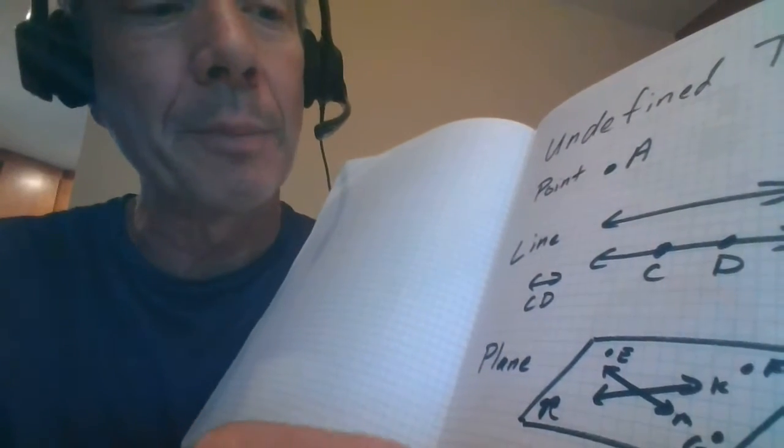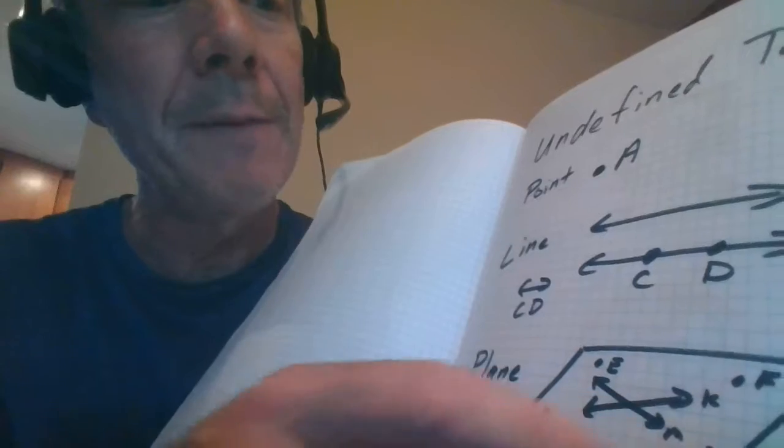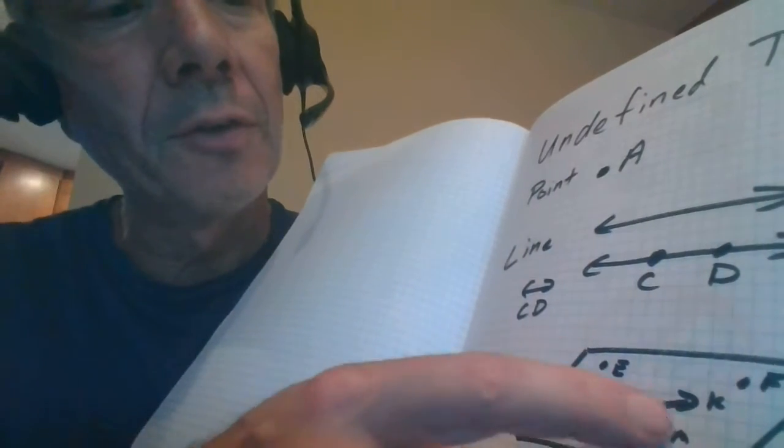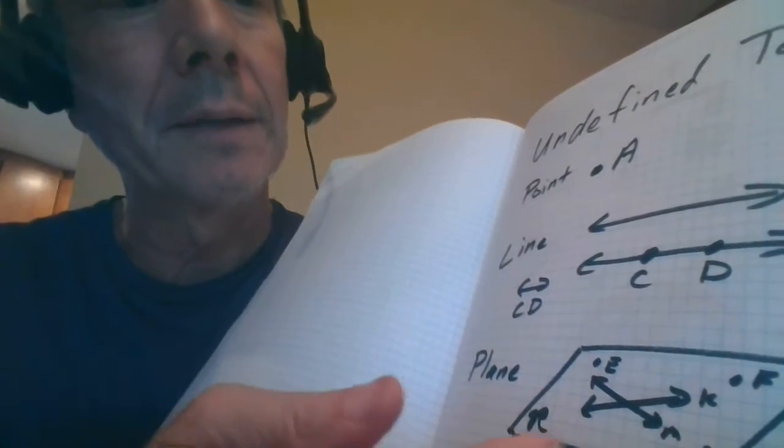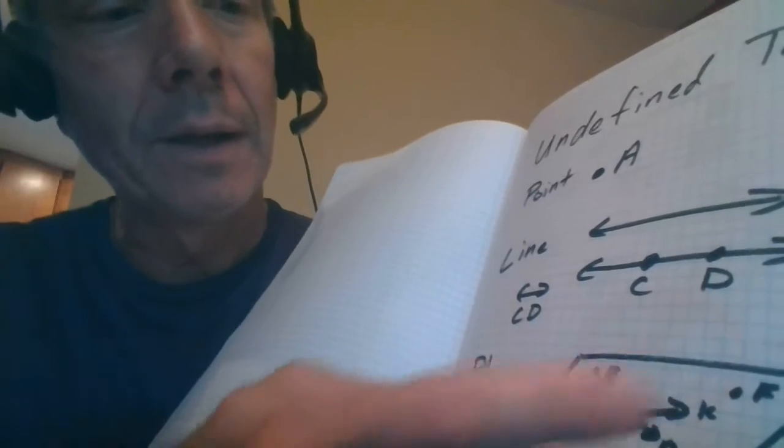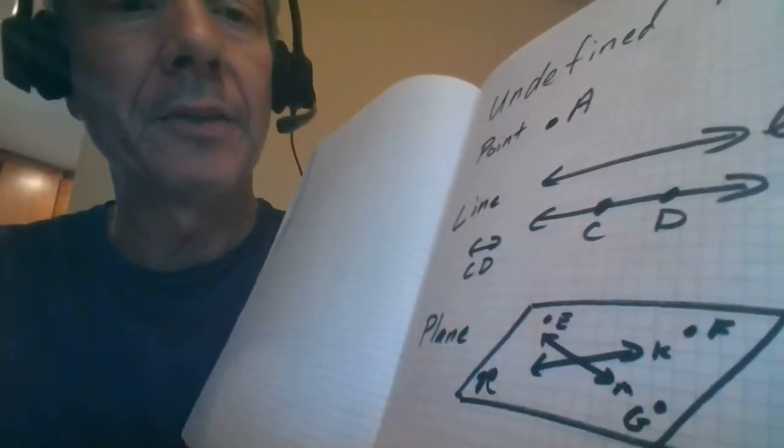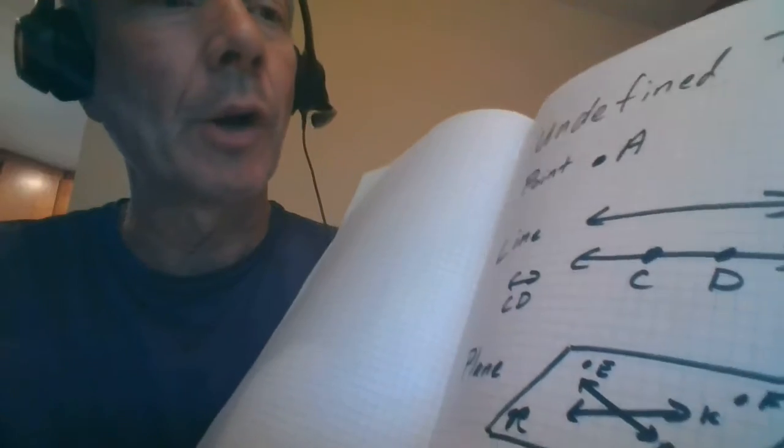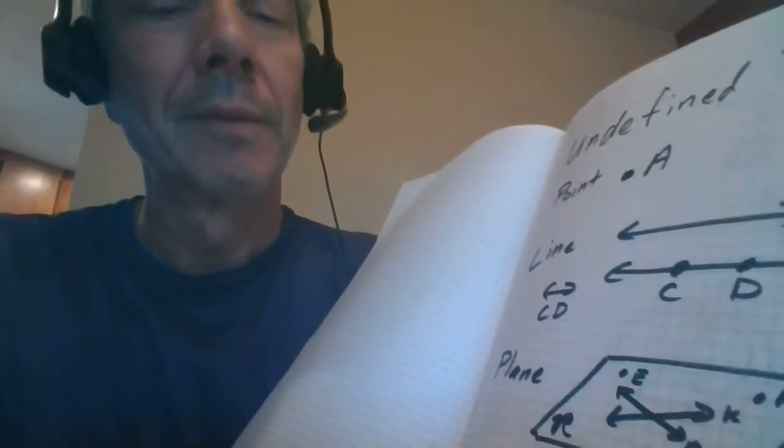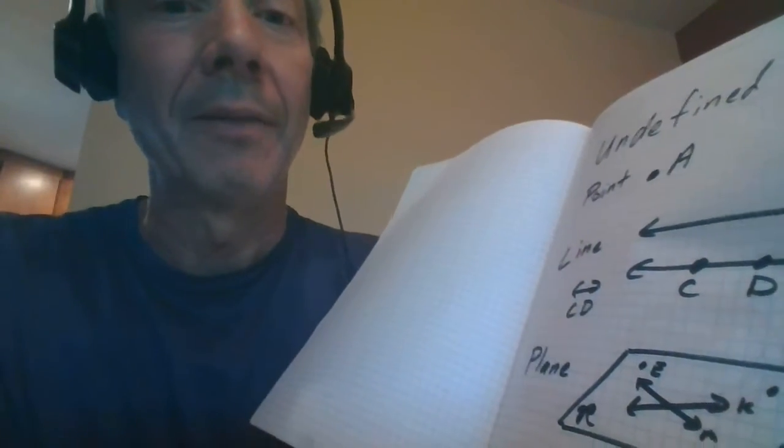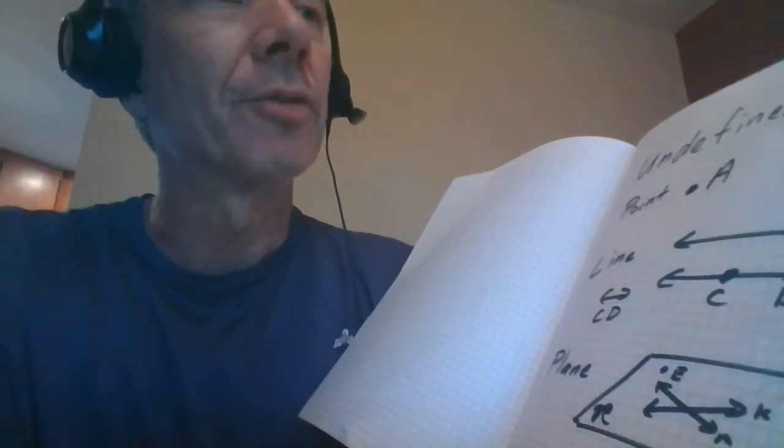A plane is often indicated with a large uppercase in cursive in a lot of books. It can also be defined by three points, so I could call this plane EFG. Or sometimes defined by two lines, I could say it's the plane containing lines K and M. So plane, line, and point are undefined terms, although they really are defined. You'll find the definitions like the first page of the book.